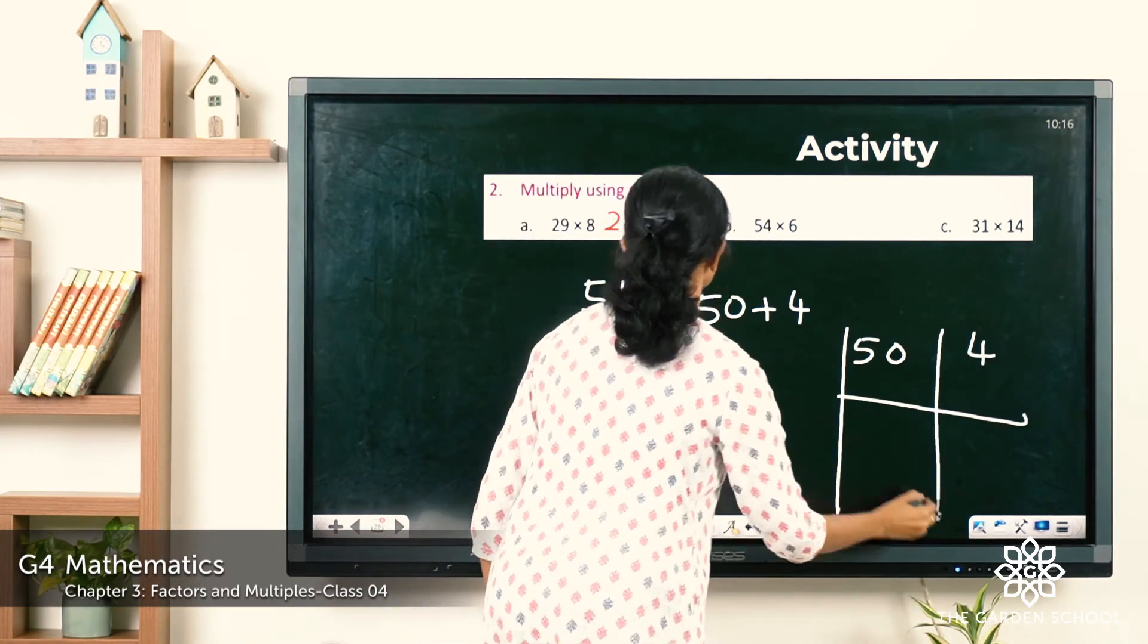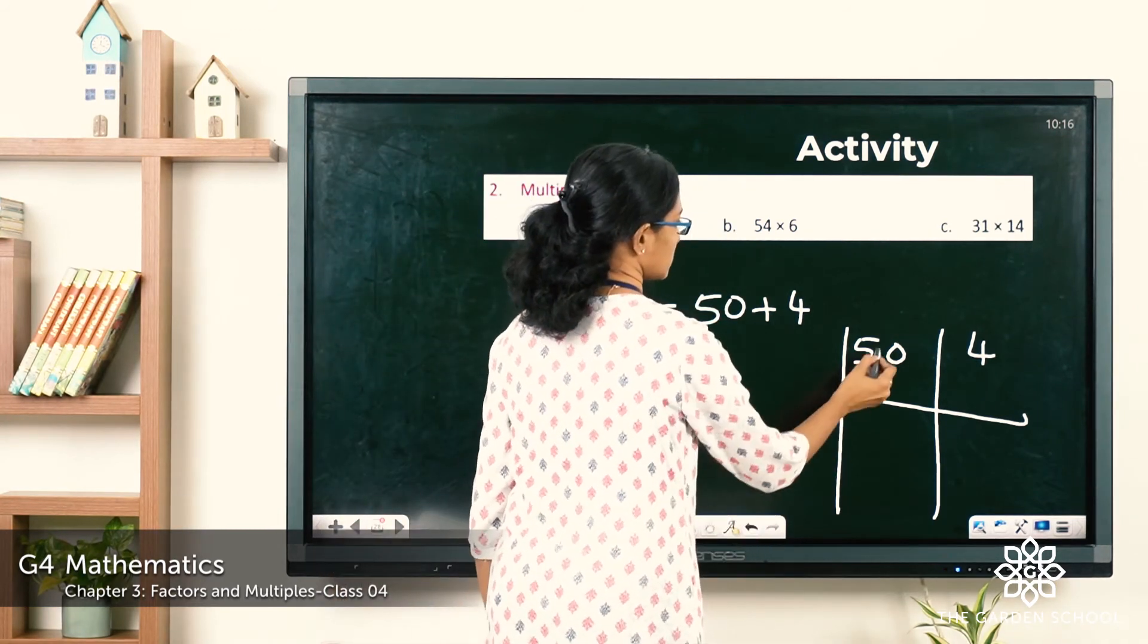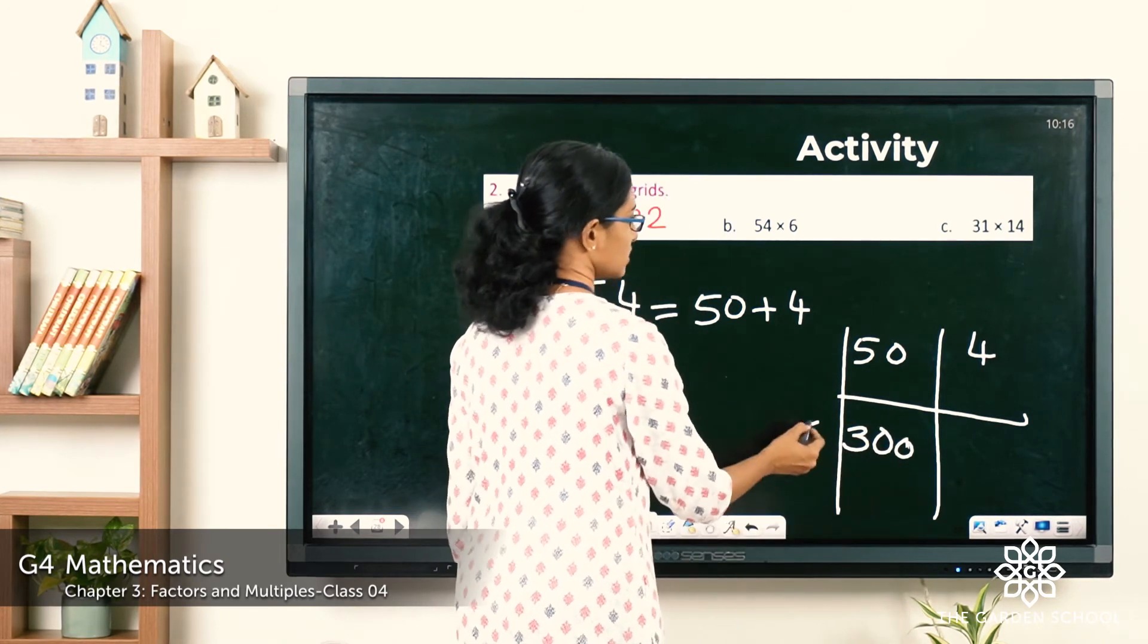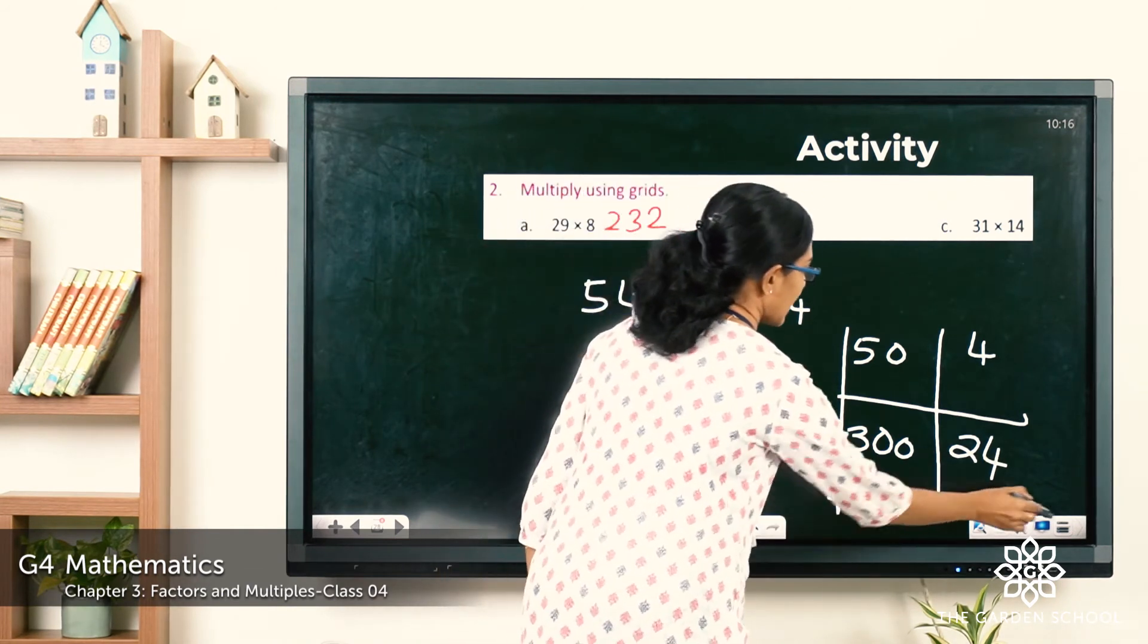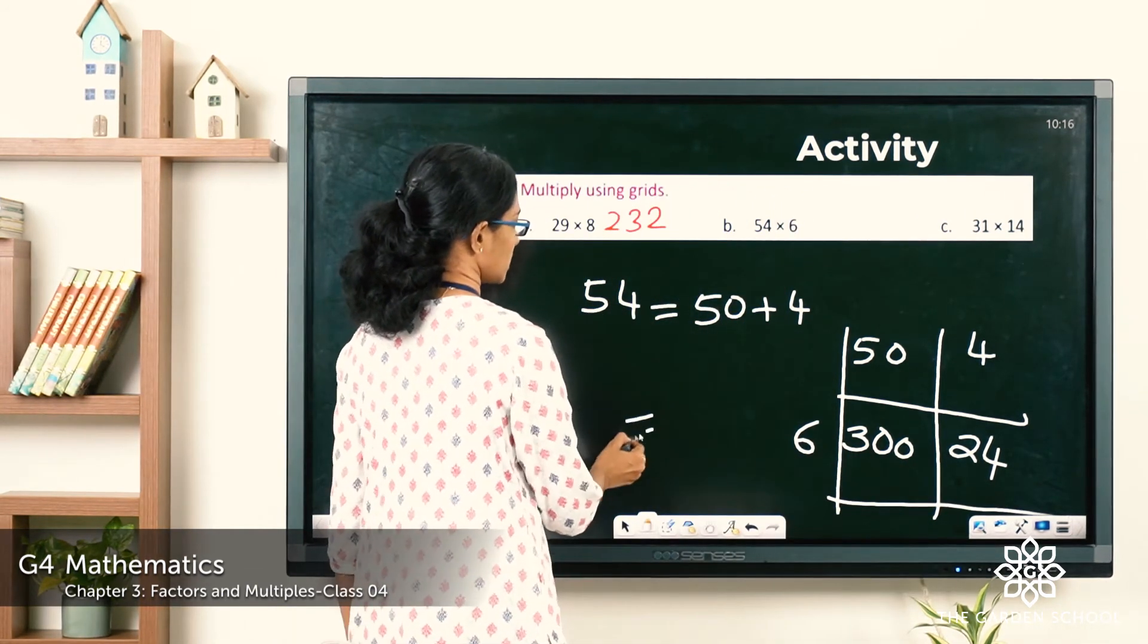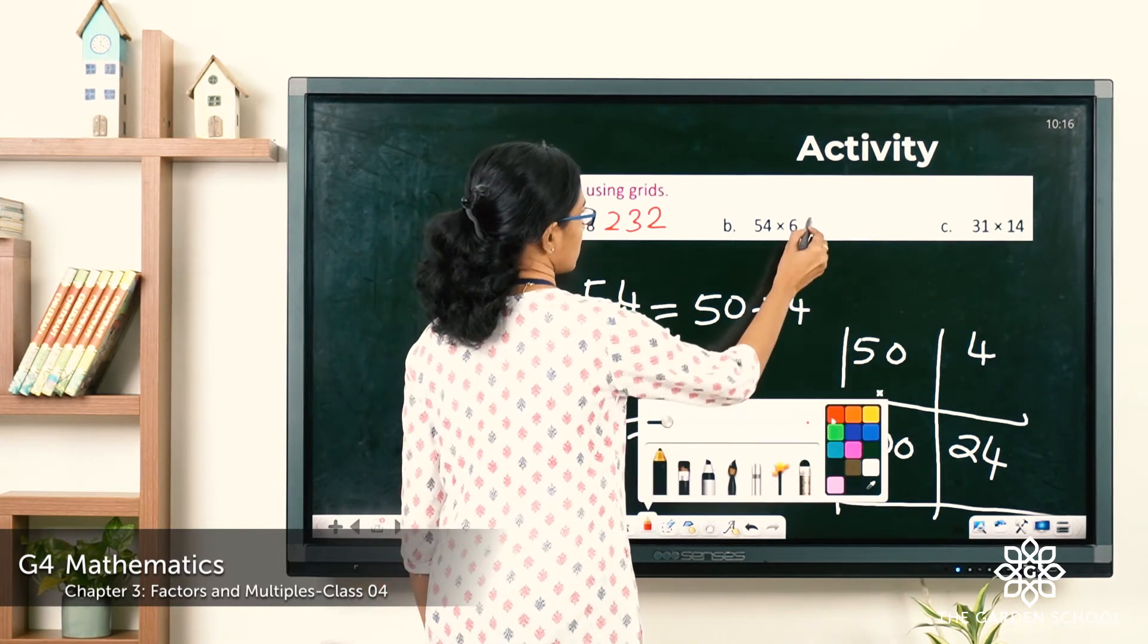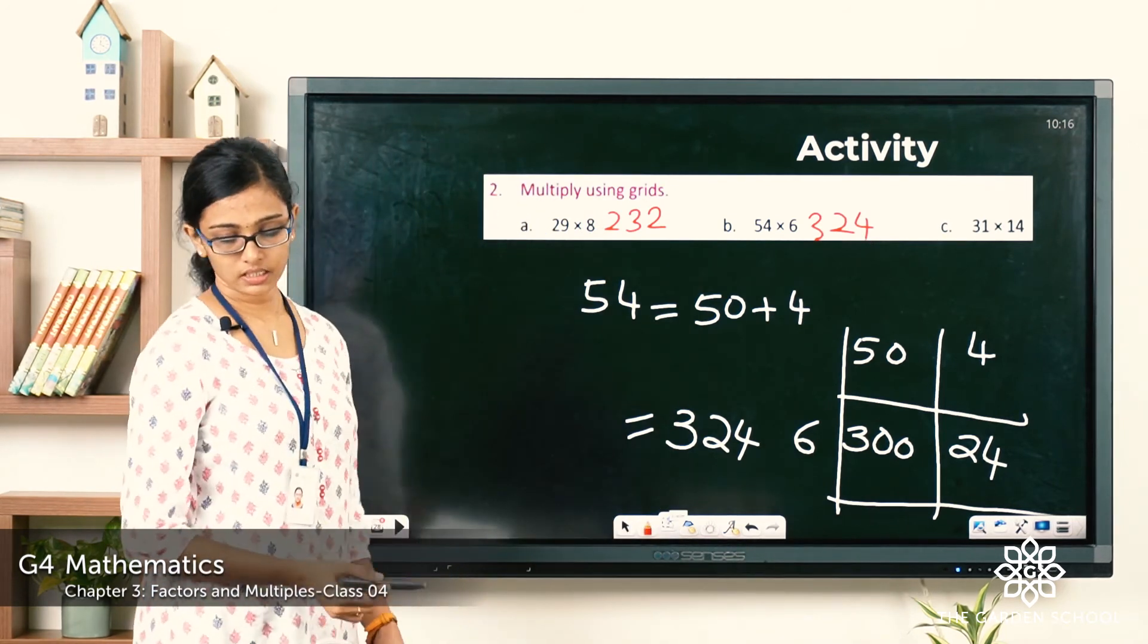So 6 times 50. 6 into 5 is 30, then that 0 here. 6 into 4 is 24. So let's add up these two numbers which will give you how much? 300 plus 24 is 324. So I hope your answers are correct.